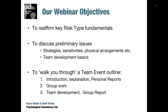The third objective is to take you through a team event outline — walking you through that in detail. It's broken into three separate components: an introduction; an explanation about risk type and dealing with personal reports for participants; then group work that helps the group discuss and get into dialogue; and finally, consideration of the group report for that team, exploring how to perform better as a team.